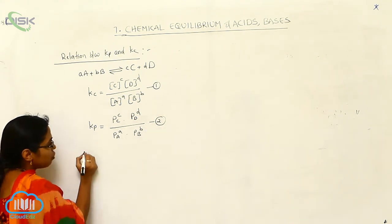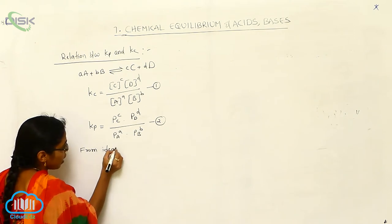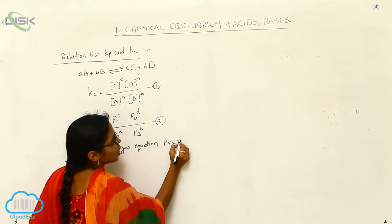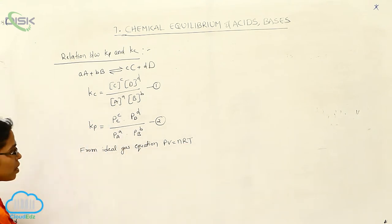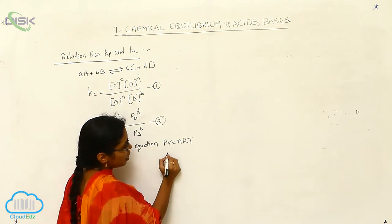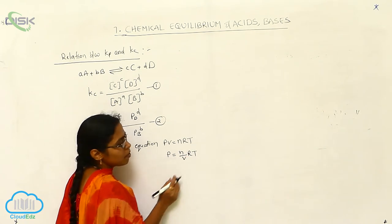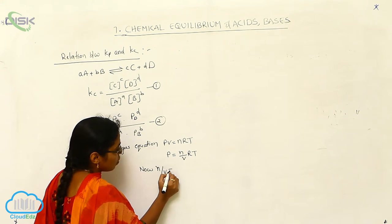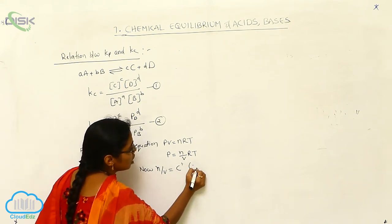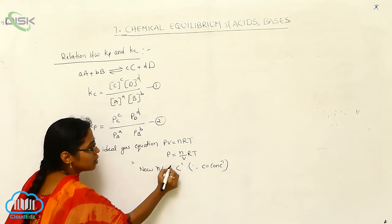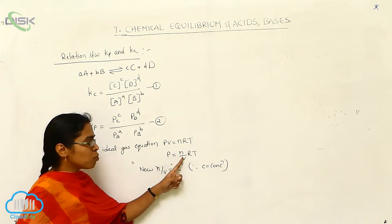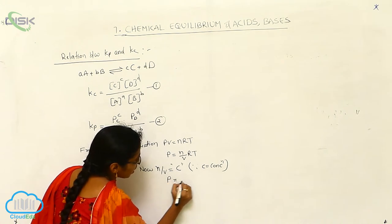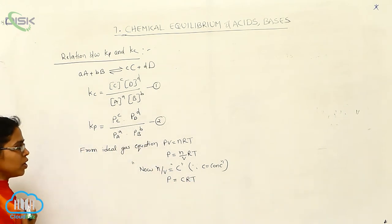From the ideal gas equation: PV = nRT. Taking volume to the right side gives P = (n/V)RT. Here, n/V is the number of moles per volume, which is nothing but concentration, expressed as C. So our equation becomes P = CRT, where C represents molar concentration.